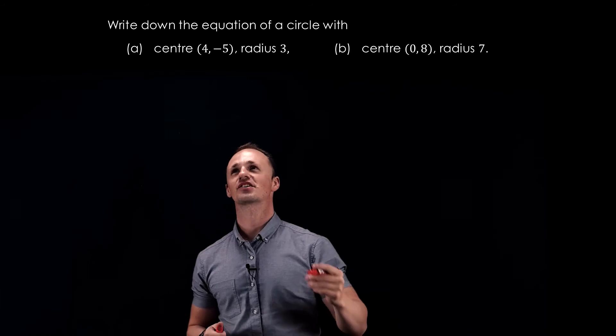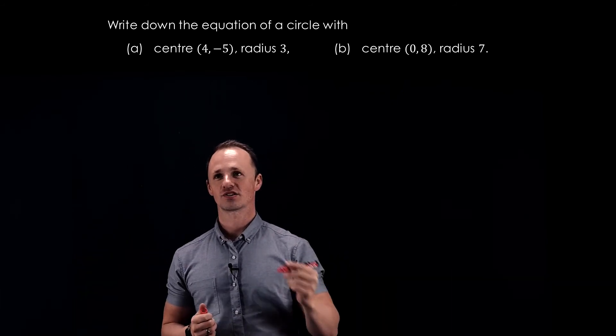This time we've got a circle with center (4, -5), radius 3.